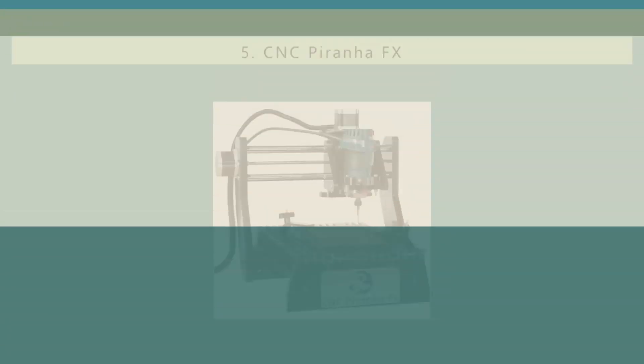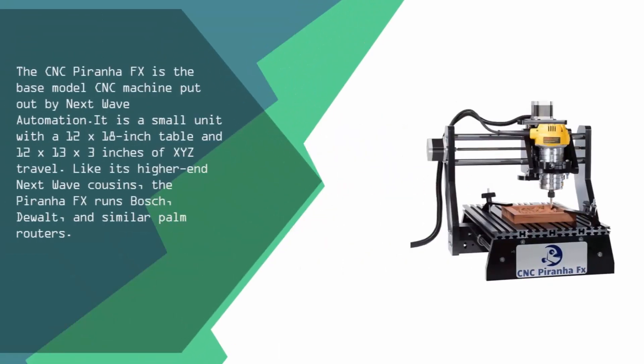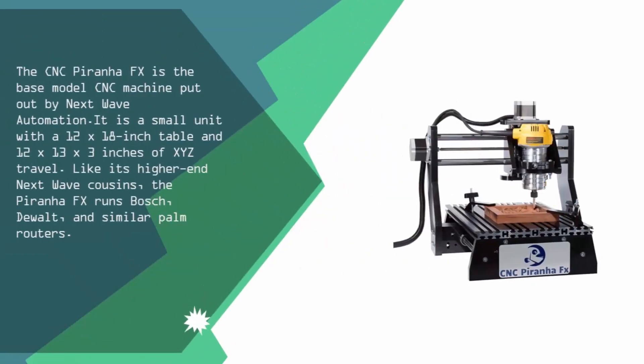The CNC Piranha FX is the base model CNC machine put out by Nextwave Automation. It is a small unit with a 12 x 18 inch table and 12 x 13 x 3 inches of XYZ travel. Like its higher-end Nextwave cousins, the Piranha FX runs Bosch, Dewalt, and similar palm routers.